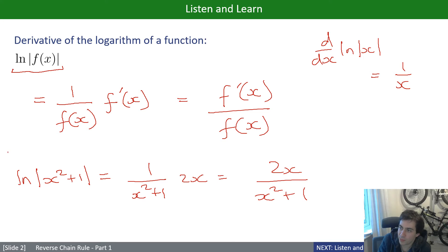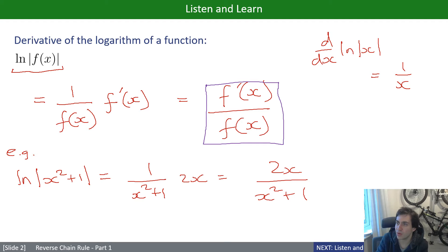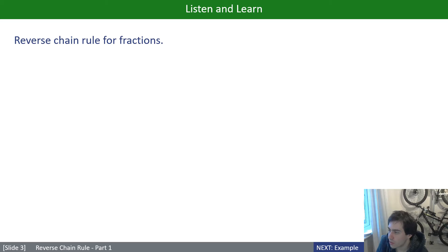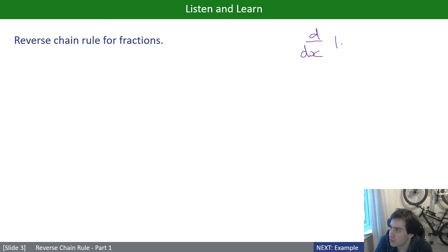That's the example. The key result is this: the derivative of ln(f(x)) equals f'(x)/f(x). Let's remember that, because we're going to make use of it when we look at reverse chain rule. This is the first of two possible reverse chain rule types — the reverse chain rule for fractions.